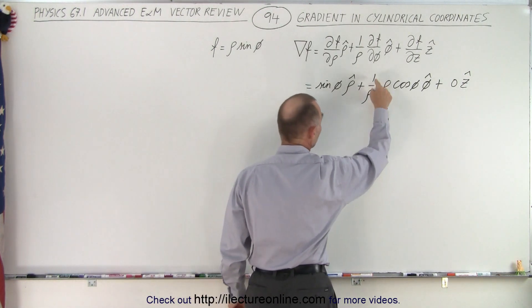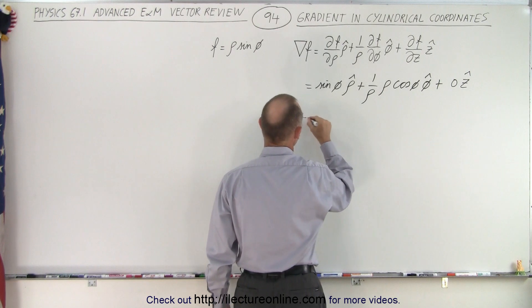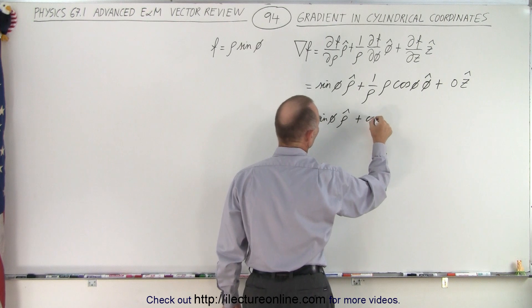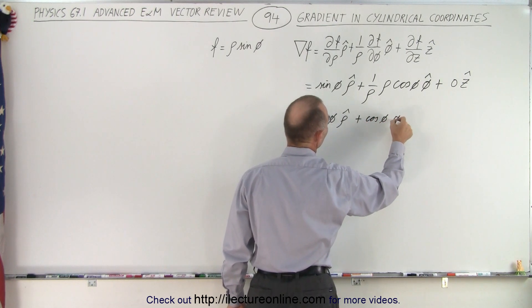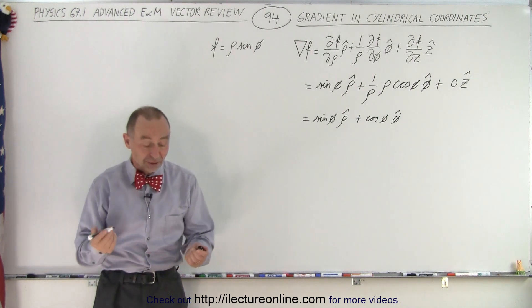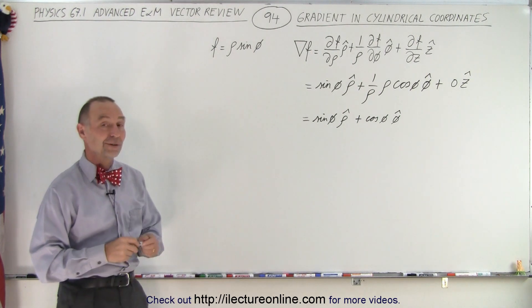Now notice that rho and 1 over rho cancel out. So this becomes equal to the sine of phi in the rho direction, plus the cosine of phi in the phi direction, plus 0 in the z direction. And that is how we take the gradient in cylindrical coordinates.